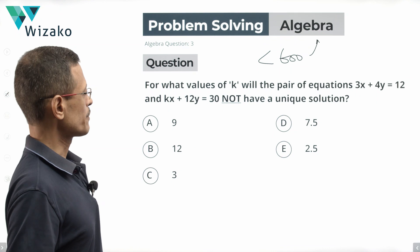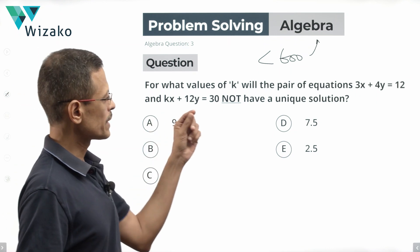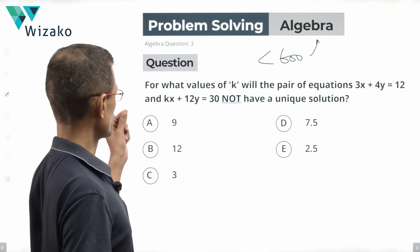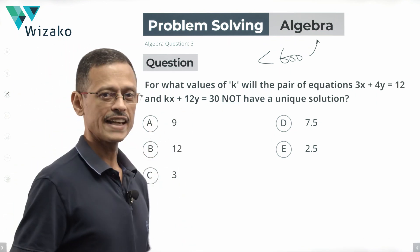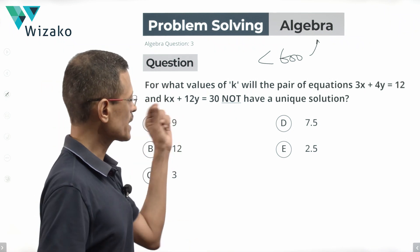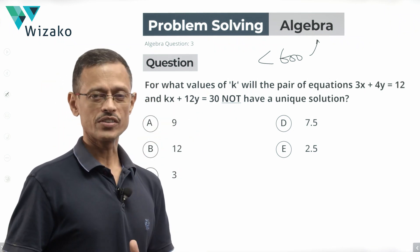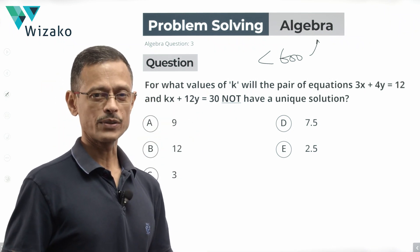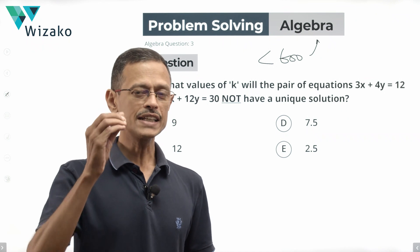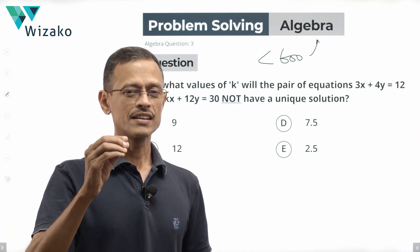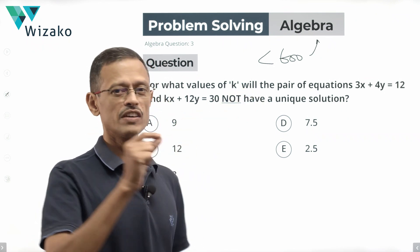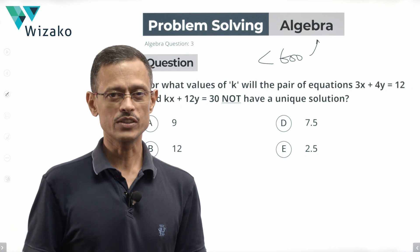For what values of k will the pair of equations 3x + 4y = 12 and kx + 12y = 30 not have a unique solution? That's what we need to find. So at some level we need to know the condition under which these two equations will not have a unique solution.